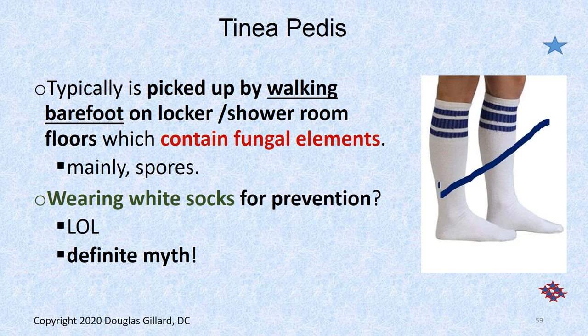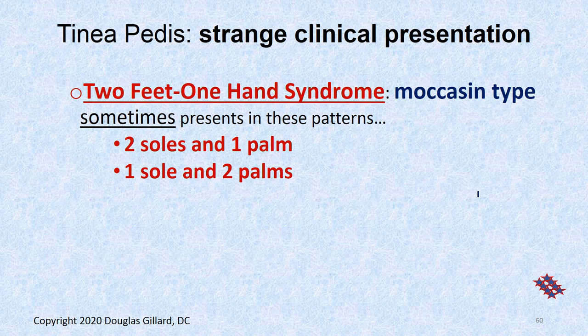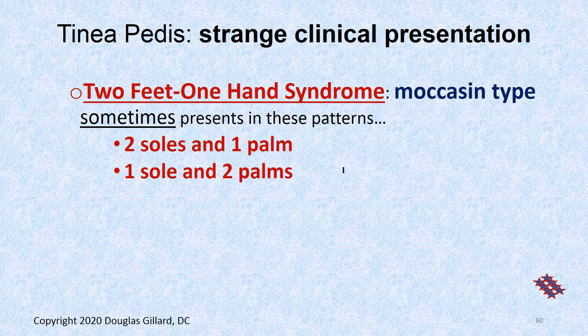This is a myth: when I went to school they used to make us wear white socks because they thought the white somehow discouraged the passing of spores. That's a complete myth — it has nothing to do with white socks. It can have a strange clinical presentation called two feet, one hand syndrome. Some people get the moccasin type on both feet and the palm of one of their hands, but the other palm is fine — or reverse that. This occurs more often statistically than you'd expect, and we don't know why, but it does present like that.